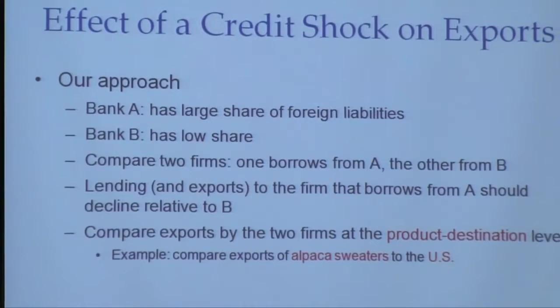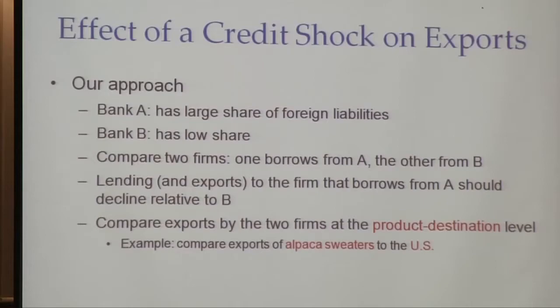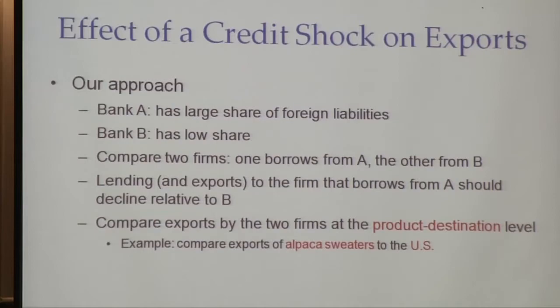The idea is to use this cross-sectional heterogeneity to estimate our effect. Consider Bank A — say Citibank or HSBC — with a large share of foreign liabilities, and Bank B with a low share. We compare the exports of two firms, one borrowing from each bank. Of course, firms and banks are not matched randomly — there are reasons why you borrow from HSBC and not Santander. So instead of comparing total exports of firms, we compare exports at the product-destination level: for example, exports of alpaca sweaters to the U.S. across two firms, comparing product by product and destination by destination.